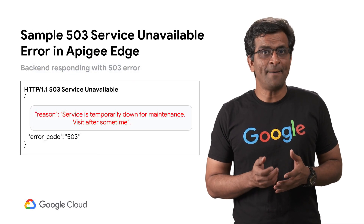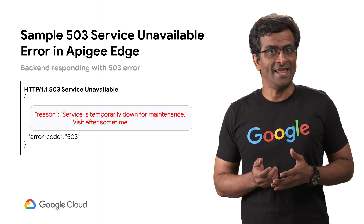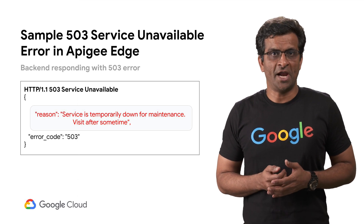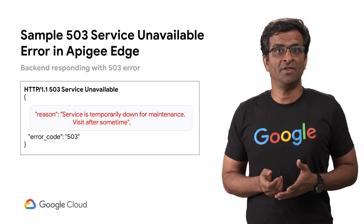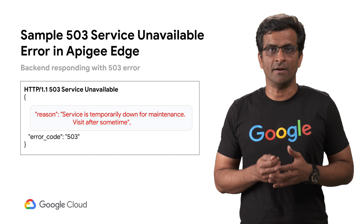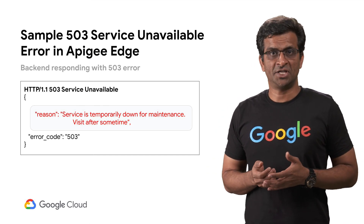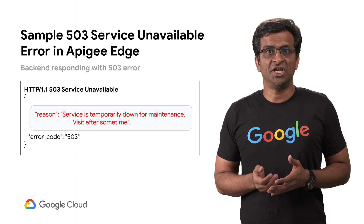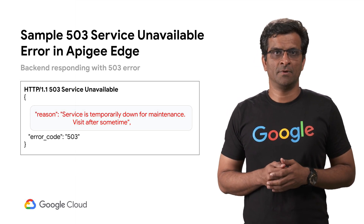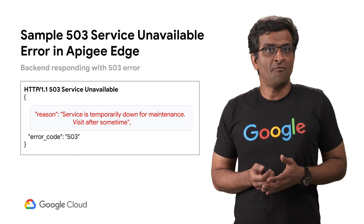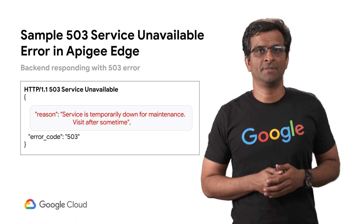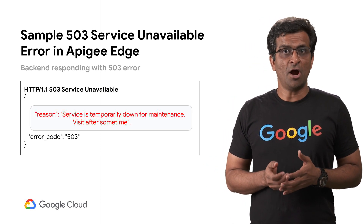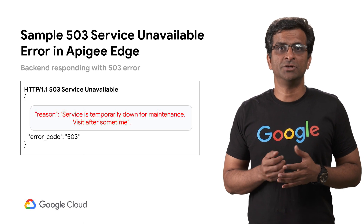I'll show you some sample error messages that come along with a 503 Service Unavailable Error in APG Edge. The first example shows a back-end service responding with a 503 Service Unavailable Error. The key points to note are the Reason field, which is indicating that the back-end service is under maintenance. In this case, the cause of the 503 error is the back-end service itself. Beware that the format and content of the error message can vary and are completely dependent on the implementation of the back-end service.